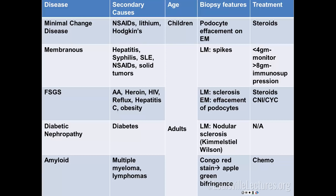Minimal change disease is the most common nephrotic syndrome in children, but you can have it in adults. Secondary causes include NSAIDs, lithium, and Hodgkin's lymphoma. On biopsy it's essentially normal except on electron microscopy you'll see podocyte effacement. Podocyte effacement can occur in any nephrotic syndrome, but in minimal change disease it's the only finding. Treatment is steroids.